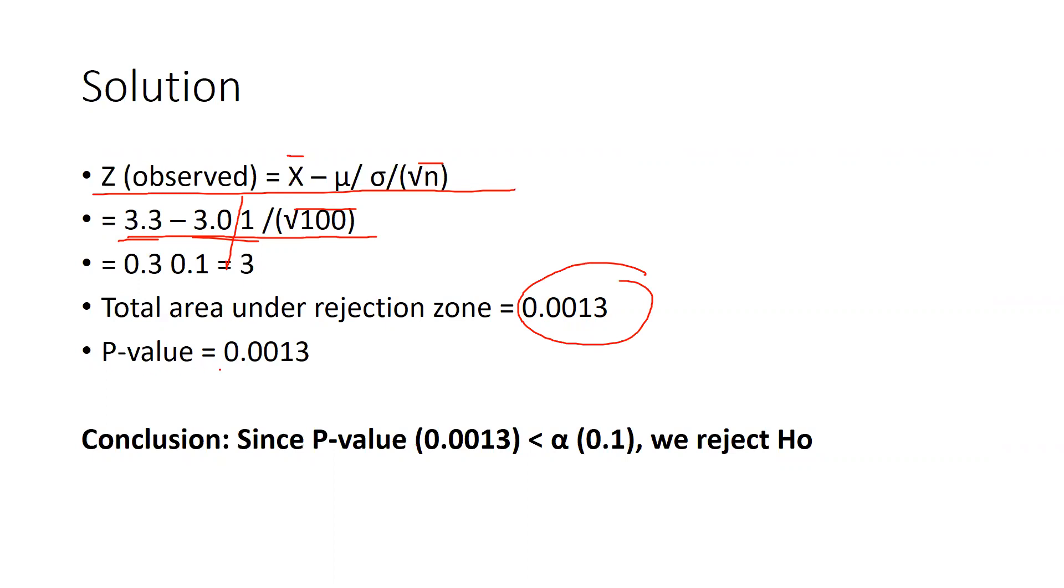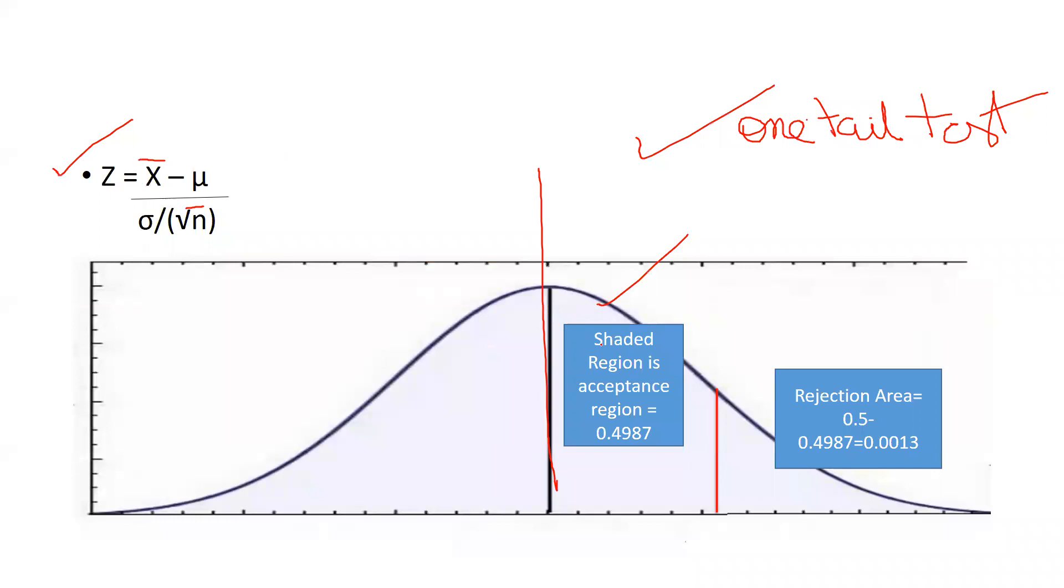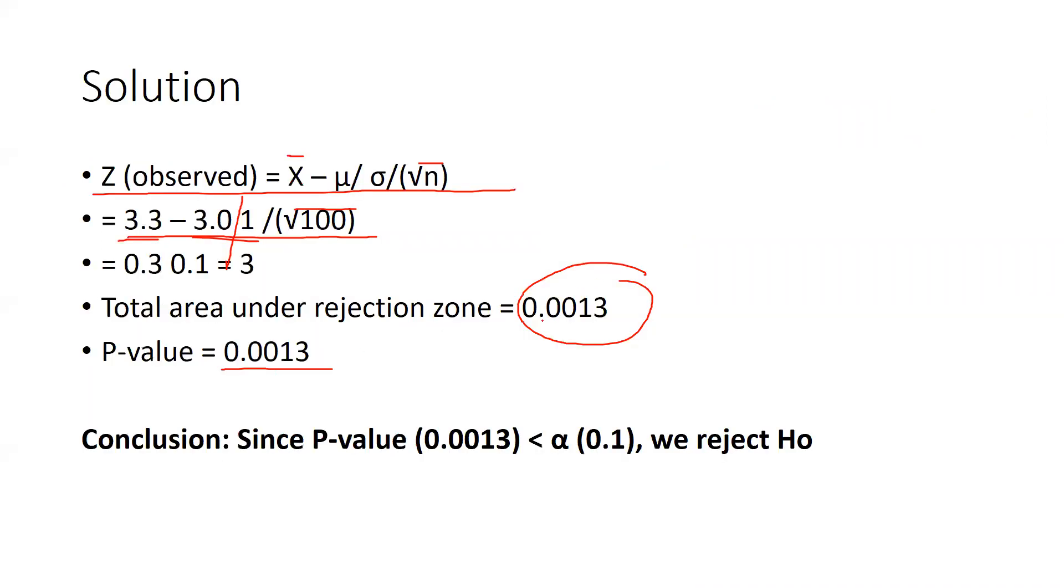And now p value is 0.0013 because you can see here how we had calculated p value, one tail test. So we will find the value of this 0.00 at the one probability.